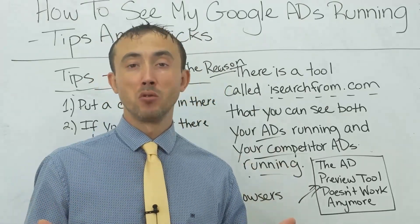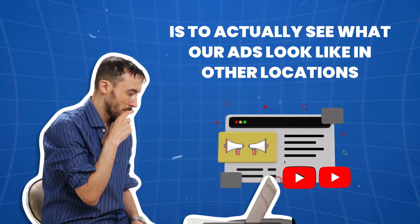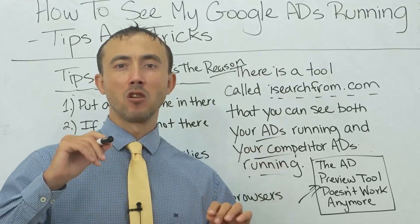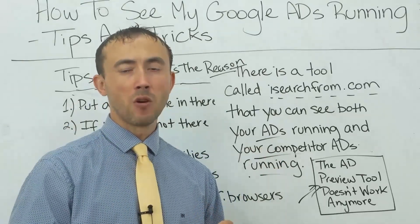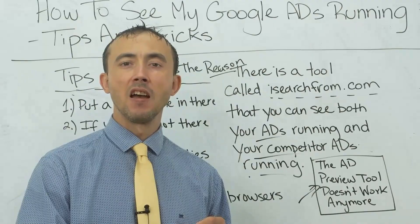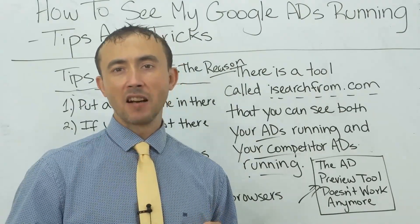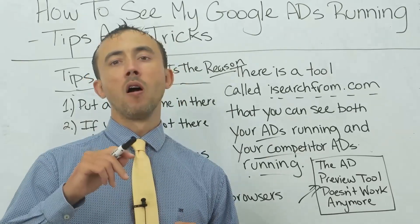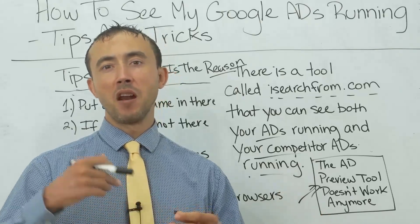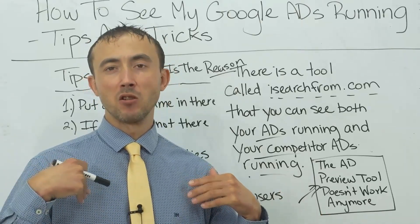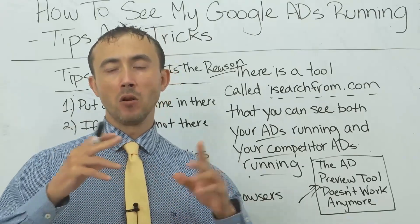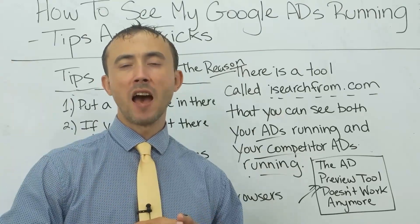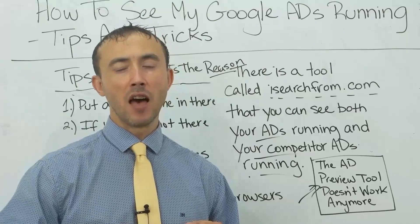Where iSearchFrom is most useful is seeing what your ad looks like in other locations, not just your own physical location. For example, we're in Phoenix but want to see what the ad looks like for somebody in L.A. — we use iSearchFrom, set the location to L.A., and search for our 5-axis CNC machine to see what it looks like for an L.A. user versus a Phoenix user. For local services, if we're running a campaign in another city, there's no way to trigger that ad by searching on Google ourselves, so we set the location in the tool to the client's city and service area.